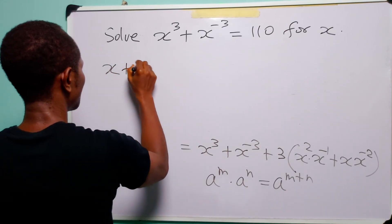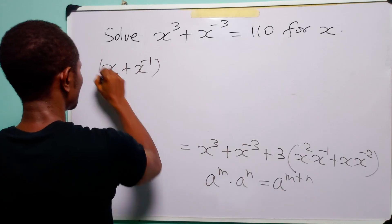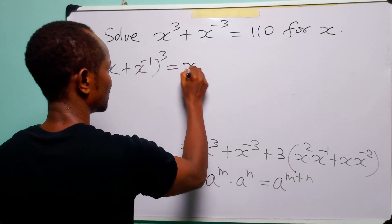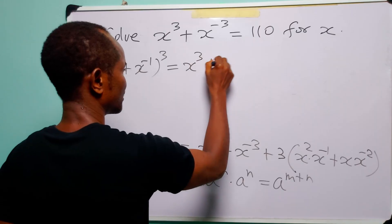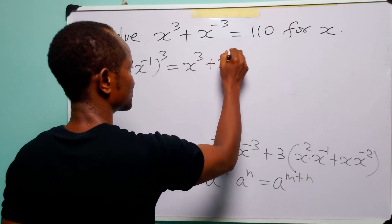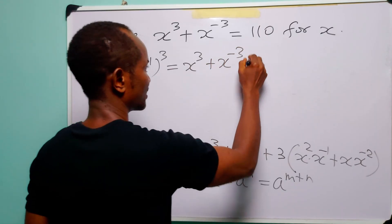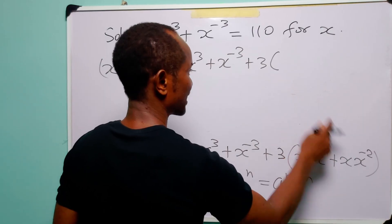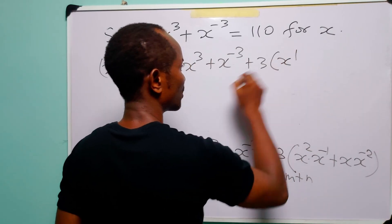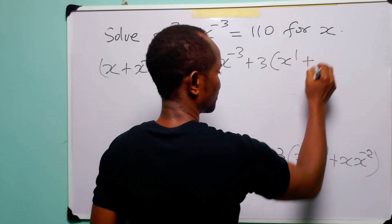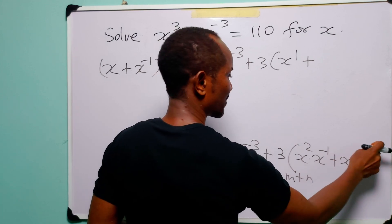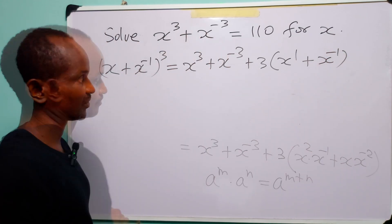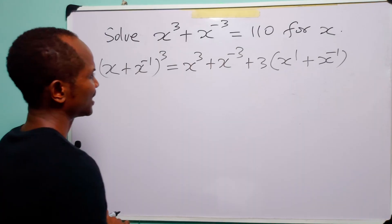Applying the exponent rule, (x + x⁻¹)³ equals x³ + x⁻³ plus 3 times (x²⁻¹ + x¹⁻²), which simplifies to x³ + x⁻³ + 3(x¹ + x⁻¹), since 2−1=1 and 1−2=−1.